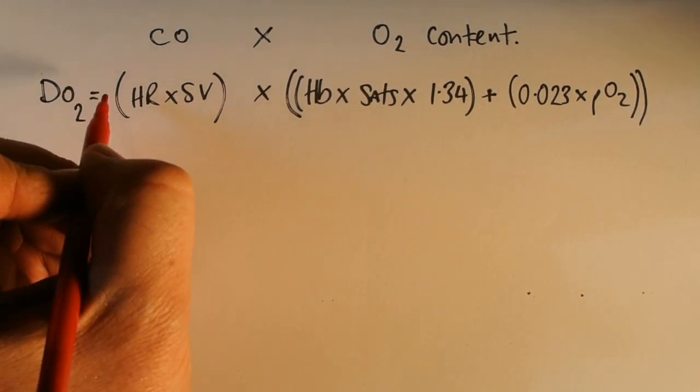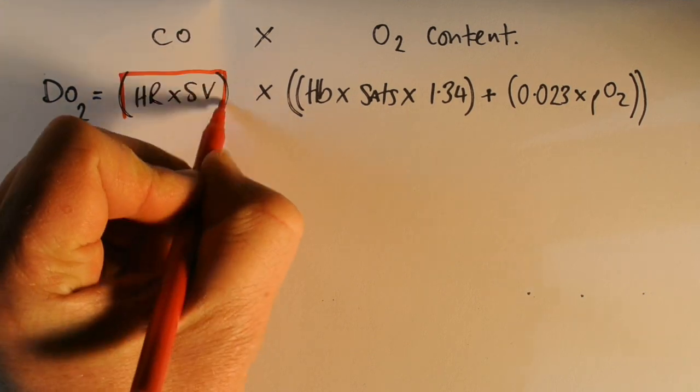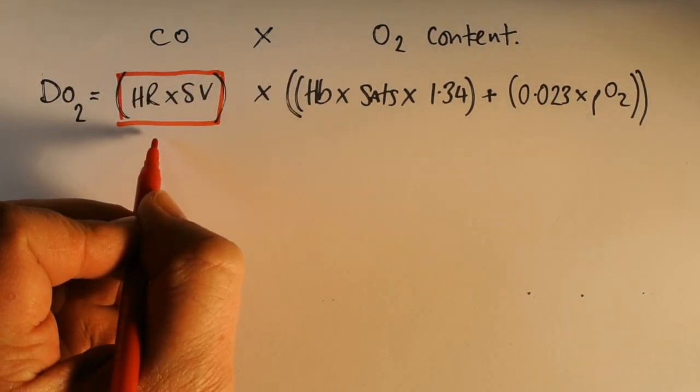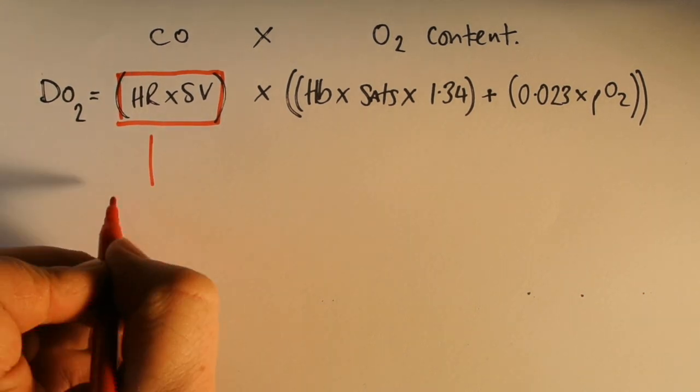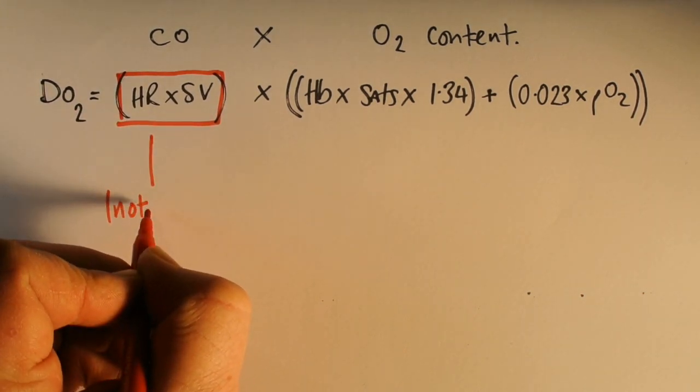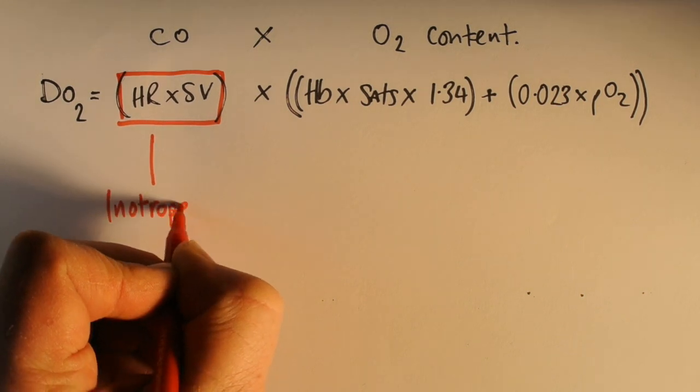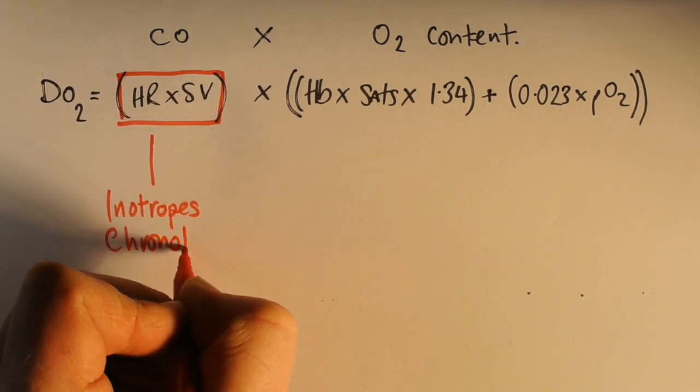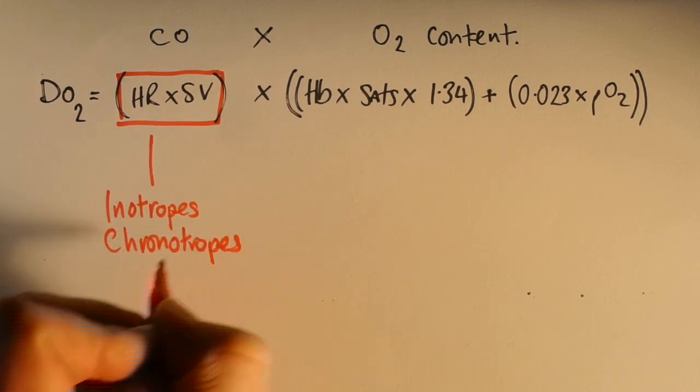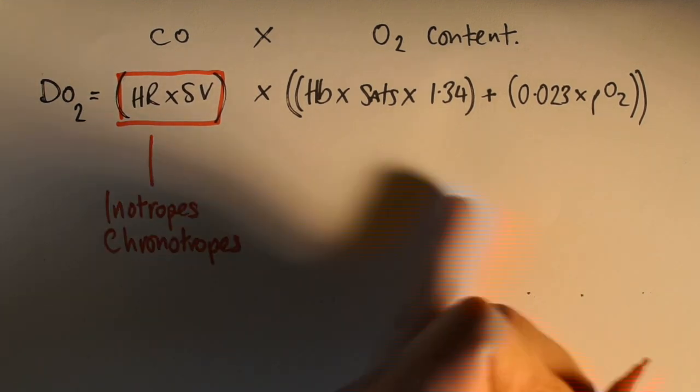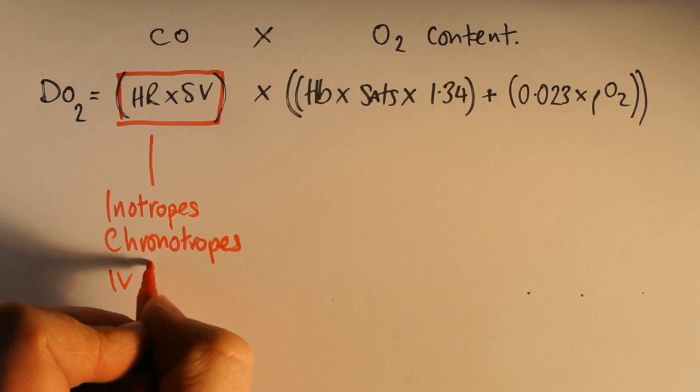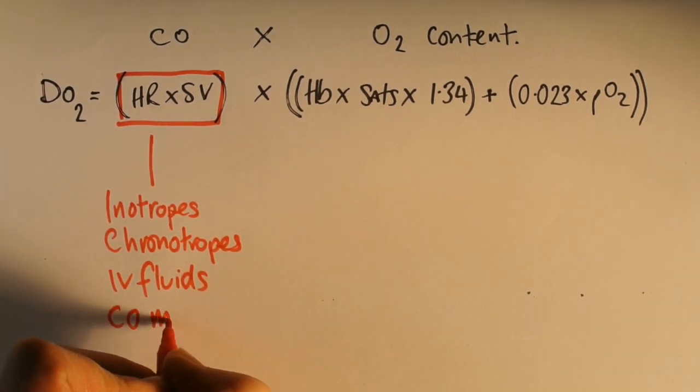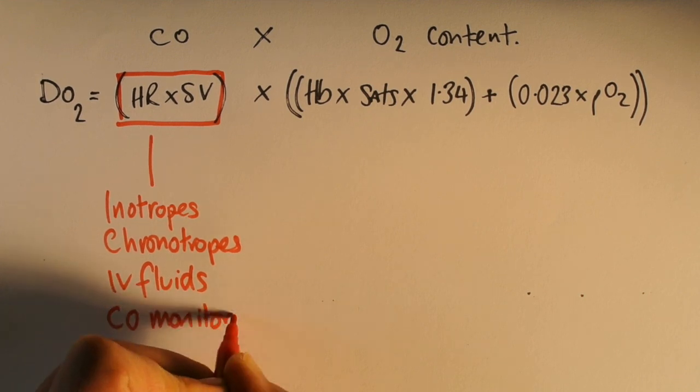What can the anaesthetist do? I can alter the cardiac output by changing either the heart rate or the stroke volume. I can use inotropes or chronotropic drugs, intravenous fluids, I can alter the heart rate with drugs such as beta blockers, and I can also use cardiac output monitoring to help guide those treatments.